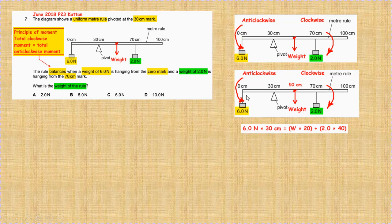This is for the anticlockwise on the left side. And it equals, because we're having two forces on the clockwise side. From the pivot, the weight, which is symbolized by the letter W, times the 20 centimeters.